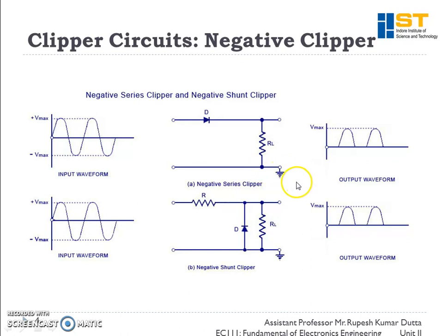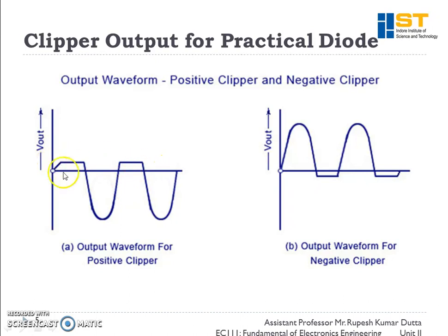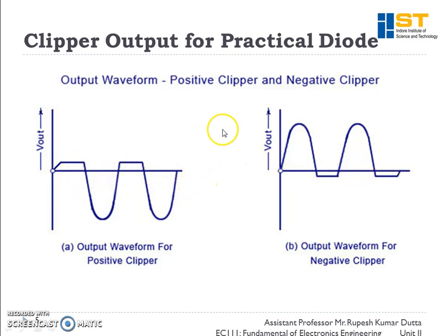The previous circuits assumed an ideal diode with no voltage drop. In practice, there is a 0.7 V voltage drop across the diode, so the output of practical positive clippers will be shifted by +0.7 V and negative clippers by -0.7 V. Practically we get this modified waveform at the output.